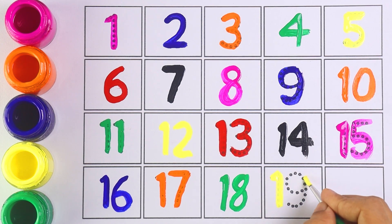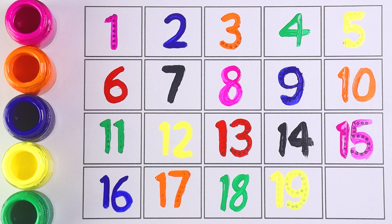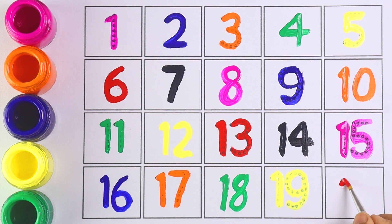Number nineteen. Now I am writing number twenty. Two and zero makes the number twenty.